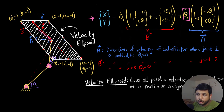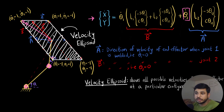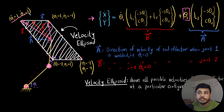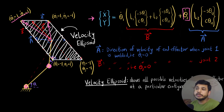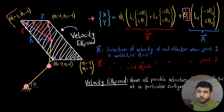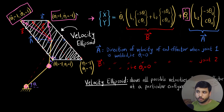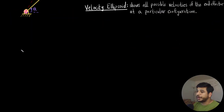The velocity ellipsoid also shows us that the robot can move faster in certain directions compared to others. For example, the velocity vector when both θ₁̇ and θ₂̇ are positive is larger than the velocity vector in another direction. So for these angular velocities, the robot moves faster in that particular direction compared to others.